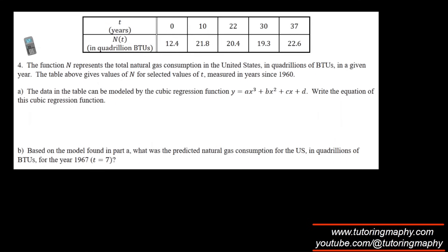The function n represents the total natural gas consumption in the U.S. in quadrillions of BTUs, and t is the number of years measured since 1960. Again, they are asking us to use a cubic model.